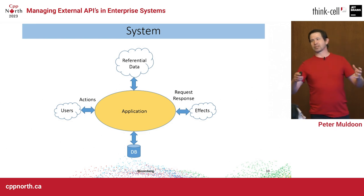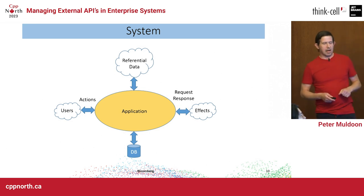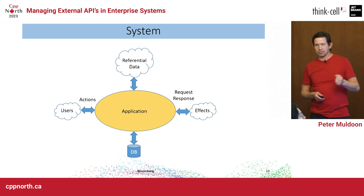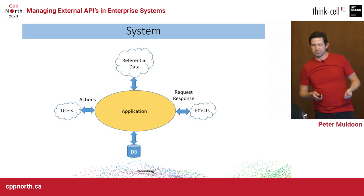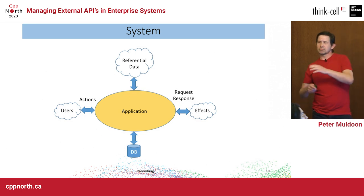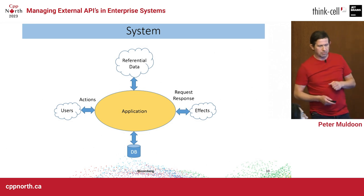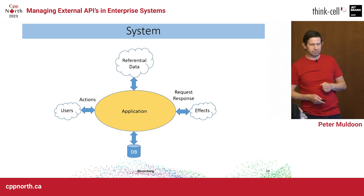In a transactional system like one I worked on, users send actions in — do trades, split trades, cancel trades. The action comes in without all the data; I don't know who this person is or what his accounts look like. I go to other systems, pull in referential data, create a complete universe of information about the transaction, validate it, mutate the state, save it to the database, and propagate the effects out to other systems — eventually down to the DTC — through some kind of IO.